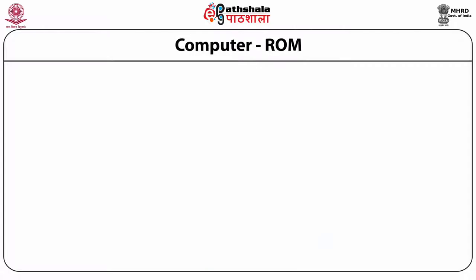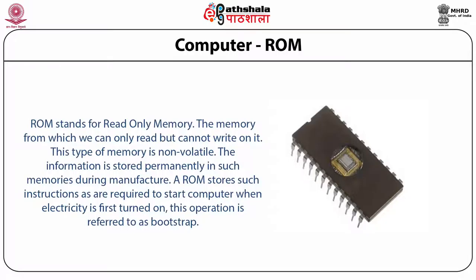ROM stands for read-only memory — the memory from which we can only read but cannot write on it. This type of memory is non-volatile and the information is stored permanently during manufacturing. ROM stores instructions that are required to start a computer when electricity is first turned on. This operation is known as bootstrapping. Certain instructions are pre-etched into the ROM at the time of manufacturing. The first ROMs were hardwired devices that contained a pre-programmed set of data or instructions. These kinds of ROMs are known as masked ROM and are less expensive.